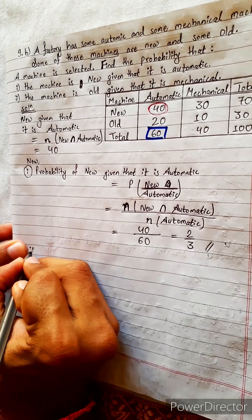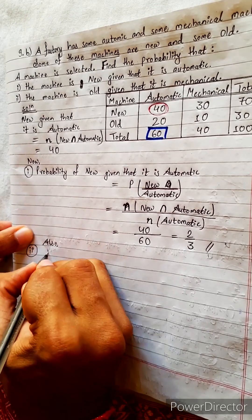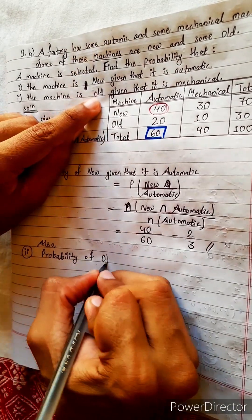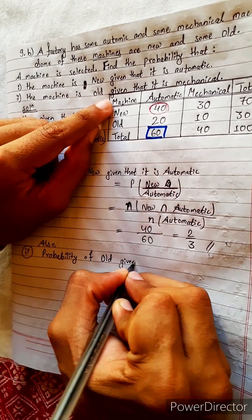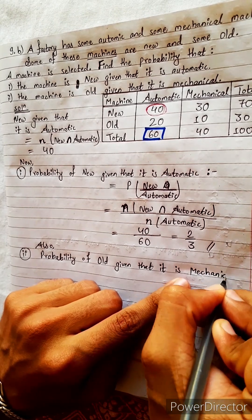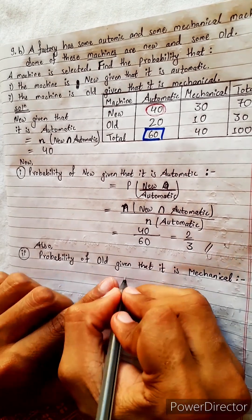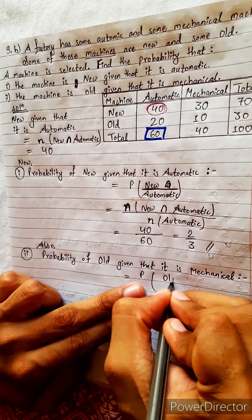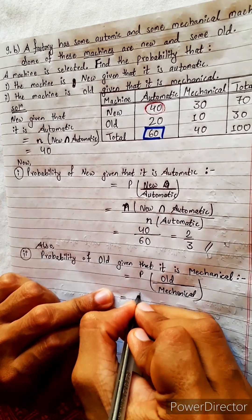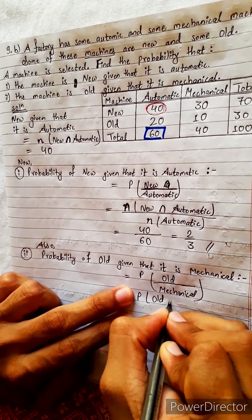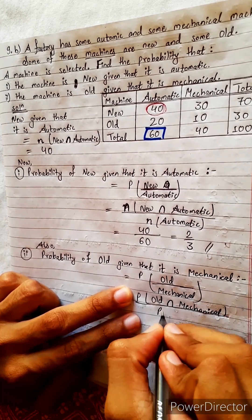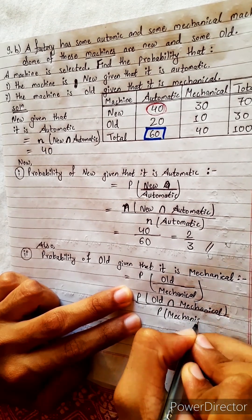Now let's try number two. Probability of old given that it is mechanical. Let's write this question as it is — given that it is mechanical. Its formula is also the same: probability of old given that it is mechanical. Its mathematical representation: old intersection mechanical divided by probability of mechanical.